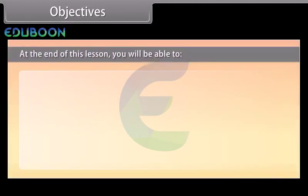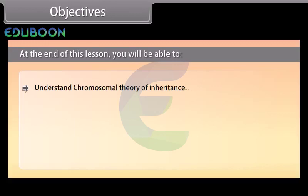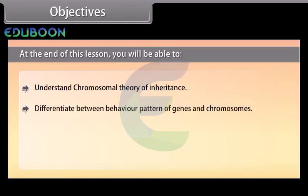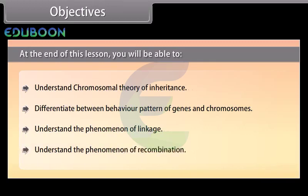At the end of this lesson, you will be able to: understand the chromosomal theory of inheritance; differentiate between the behavior pattern of genes and chromosomes; understand the phenomenon of linkage; and understand the phenomenon of recombination.